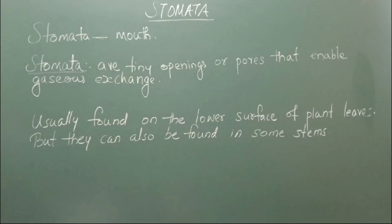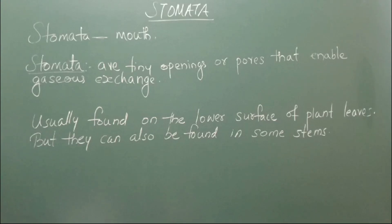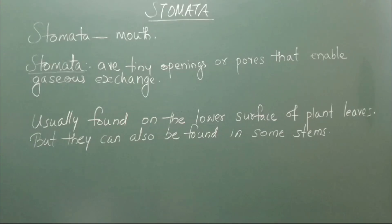What is stomata? Stomata are tiny openings or pores that enable gaseous exchange. In the plants there are leaves. These leaves breathe in carbon dioxide and breathe out oxygen during the process of photosynthesis. So through the stomata, the leaves breathe in carbon dioxide and breathe out oxygen — that is what is meant by gaseous exchange.